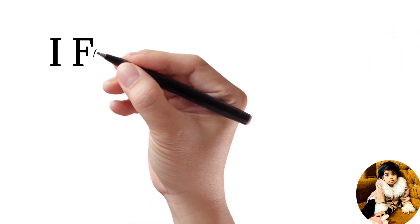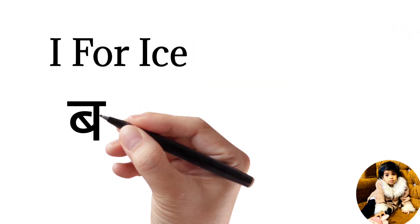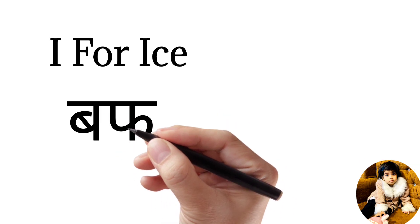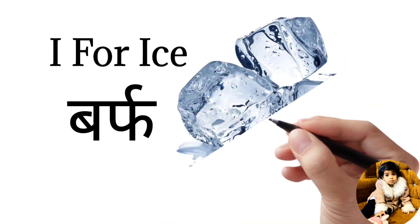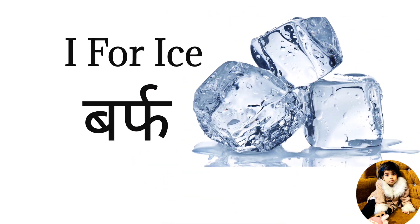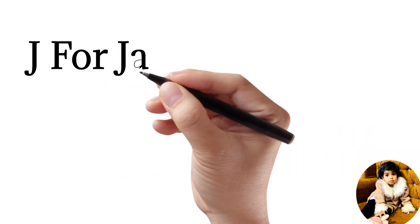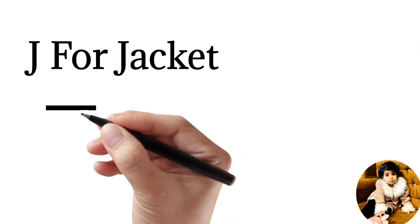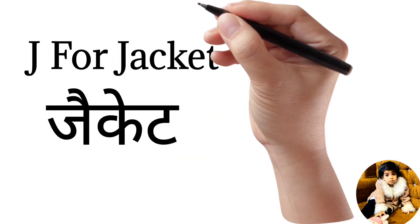I for ice, ice means burp. J for jacket, jacket means jacket.